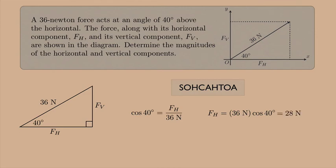Then I can use sine to get the vertical component. The sine of 40 degrees is the vertical component divided by 36 Newtons. That means the vertical component of the force is 36 Newtons times the sine of 40 degrees, and that's 23 Newtons.